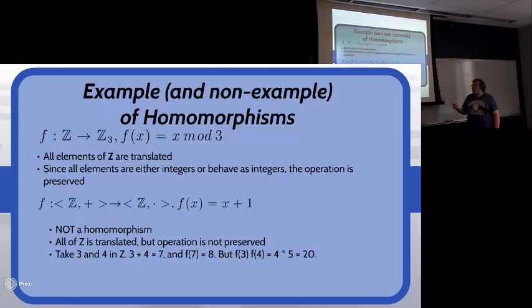A non-example would be f from Z under addition to Z under multiplication where f(x) = x + 1. It does translate all of Z, but if you take elements 3 and 4, combine them in Z you get 7, and f(7) = 8. But if you translate them first, f(3) = 4 and f(4) = 5, and 4 × 5 = 20, which does not equal 8. The operation is not preserved, so it's not homomorphic.